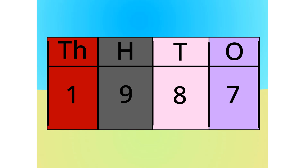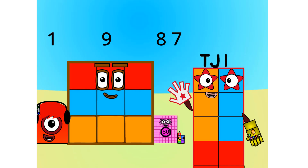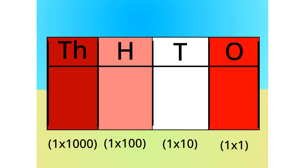Let's see this in block form, shall we? As you can see, this number is 1 nine-hundreds, 8 tens, and 7 ones. Do you notice anything with this table? The number multiplies by 10 each time it goes left one column. Because it multiplies by 10 each time, we call this system base 10.